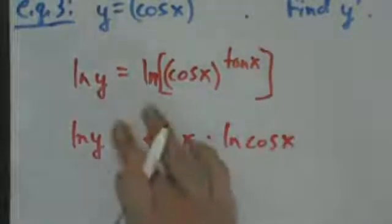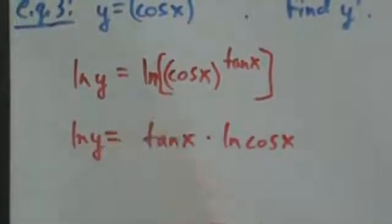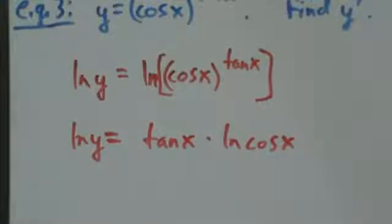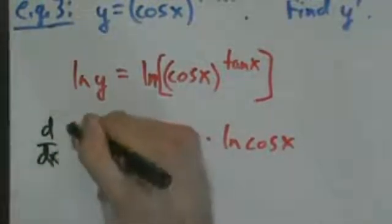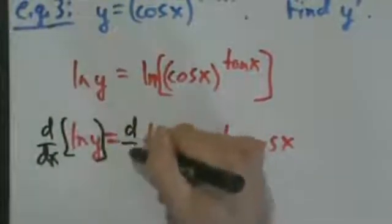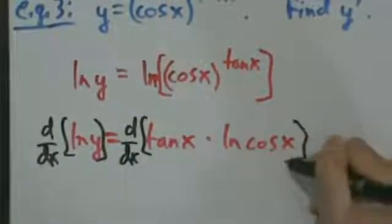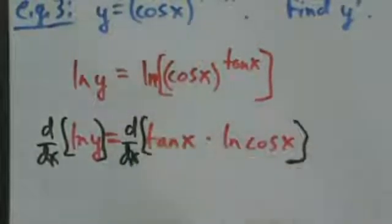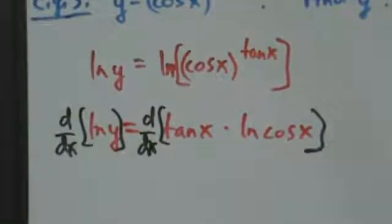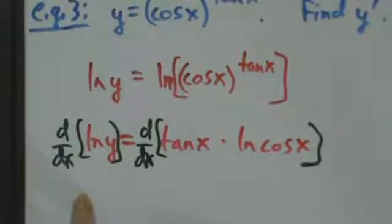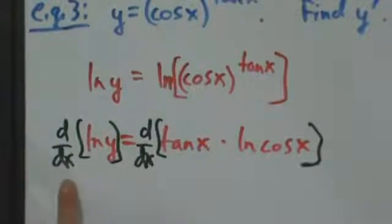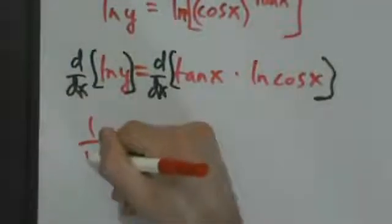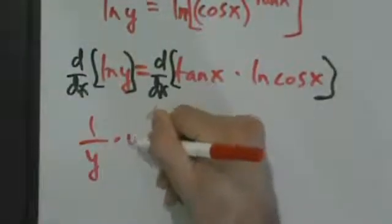Now we can take a derivative of both sides with respect to x. When you do logarithmic differentiation, just think of it as the chain rule, because it pretty much is the chain rule. The derivative of natural log of a thing is 1 over that thing times the derivative of that thing.